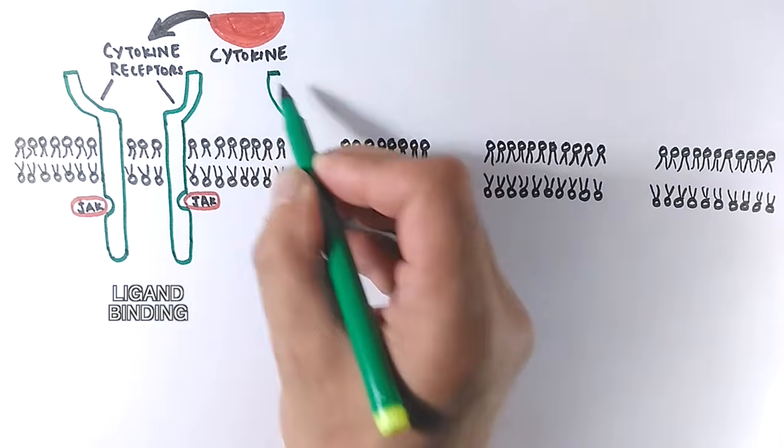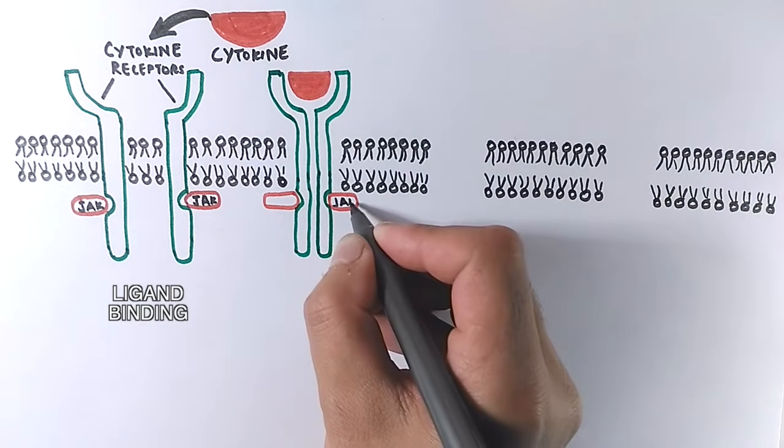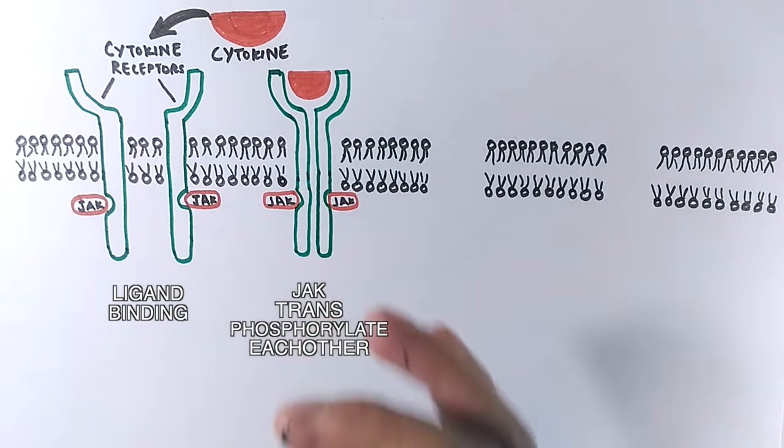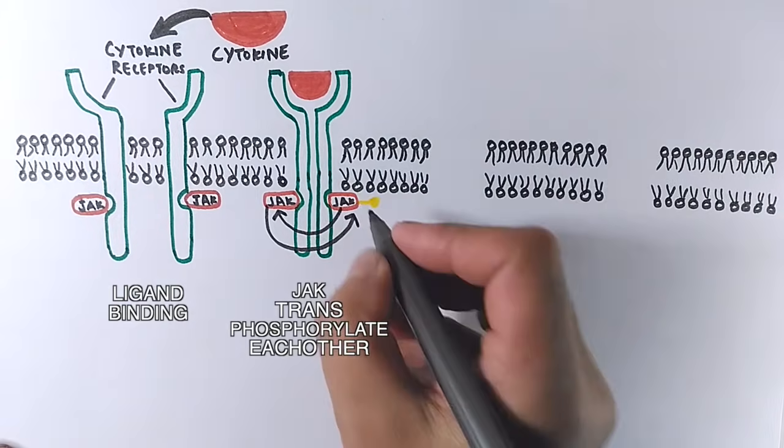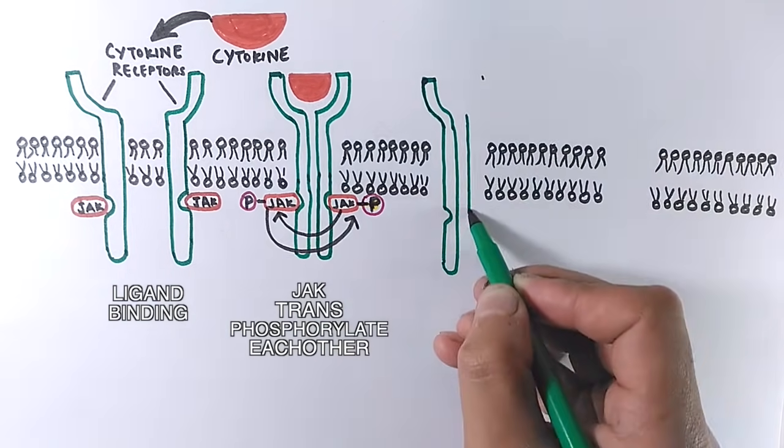After cytokine binds to the receptors, its binding alters the arrangement and brings two JAKs into close proximity, with which these two JAKs transphosphorylate each other. One JAK phosphorylates the other, thereby increasing the activity of their tyrosine kinase domains.